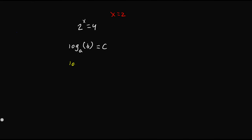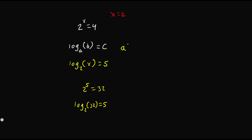Now let's look at another example. We have log base 2 of x is equal to 5. What we do is take 2, raise it to the 5th power, and find out what 2 to the power of 5 is, which is 32. And that's basically what x is: log base 2 of 32 is equal to 5. We're just taking a to the power of c is equal to b.